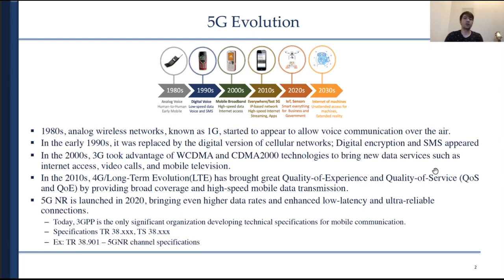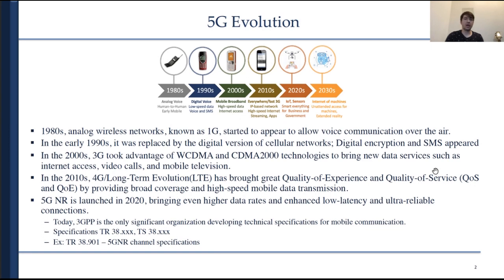In the 1980s, analog wireless networks known as 1G started to appear to allow voice communication over the air. Then with fast development in the 1990s, it was replaced by the digital version of cellular networks which we call 2G, and it gave a boost for new services. That's when digital encryption started to appear and also the Short Message Service, known as SMS, was born.